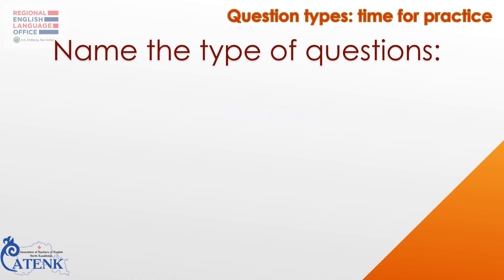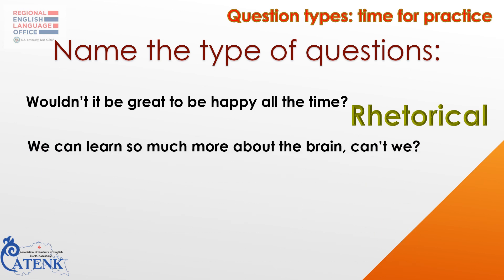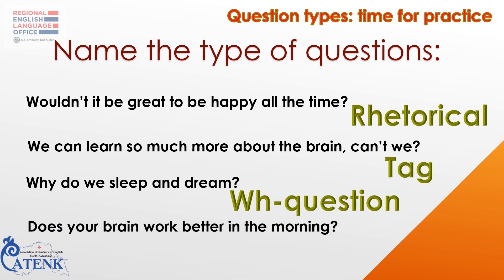Let's have some practice. Name the type of questions. Stop the video after each sentence to have time to do the task. 'Wouldn't it be great to be happy all the time?' — Stop the video. It's a rhetorical question. 'We can learn so much more about the brain, can't we?' — It's a tag question. 'Why do we sleep and dream?' — It's a WH question. 'Does your brain work better in the morning?' — It's a yes or no question.